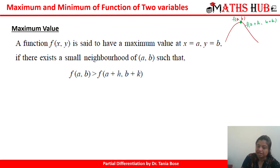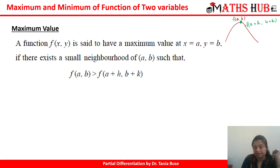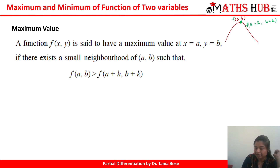So if this is the condition — that the function obtains a maximum value greater than any other neighboring point — then we say that the function has a maximum value at x equal to a and y equal to b.